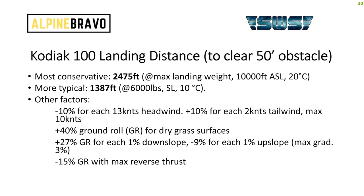There are a number of factors that will adjust the landing distance value. The first applies to total distance and concerns headwind or tailwind. Other factors relate to the ground roll: it will take longer to stop on grass surfaces as opposed to tarmac due to less effective braking, and it will take longer to stop on a down slope and shorter on an up slope. Using reverse thrust can bring the stopping distance down by about 15%.